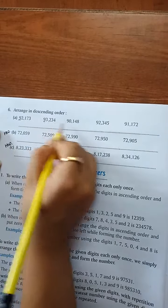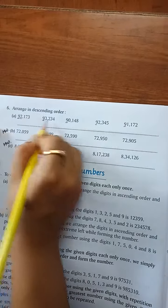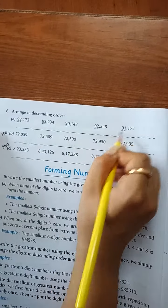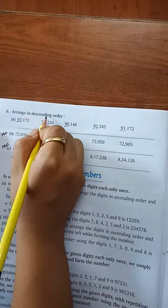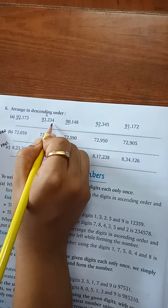First digit: 9, 9, 9, 9, 9. Same. Second digit: 2, 3, 0, 2, 1. Which is the biggest number? 3. At first place, 93,234.